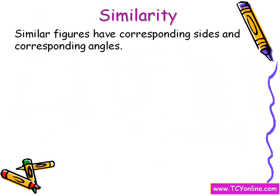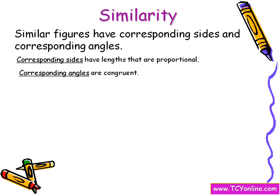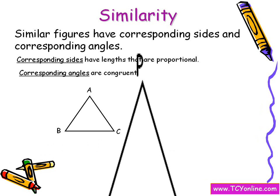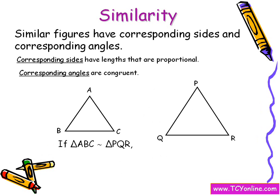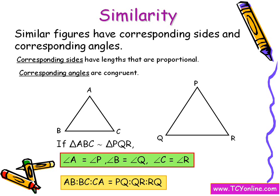Similar figures have corresponding sides and corresponding angles. These corresponding sides have lengths that are proportional, while corresponding angles of similar figures are congruent. For example, in triangles ABC and PQR which are similar, angle A equals angle P, angle B equals angle Q, and angle C equals angle R. Also, the corresponding sides are proportional: AB to BC to CA equals PQ to QR to RP.